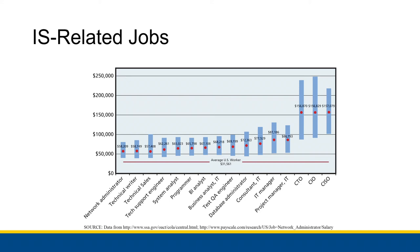The chief information security officer has a median salary of $157,000, ranging between around $100,000 at the minimum and over $200,000 with a lot of experience and education. The textbook makes note that a lot of these positions require four-year degrees, but those different degrees might vary depending on which type of position you're looking at. You could probably get a business degree and do pretty well in a lot of these positions, particularly the ones that require less hands-on technical work.